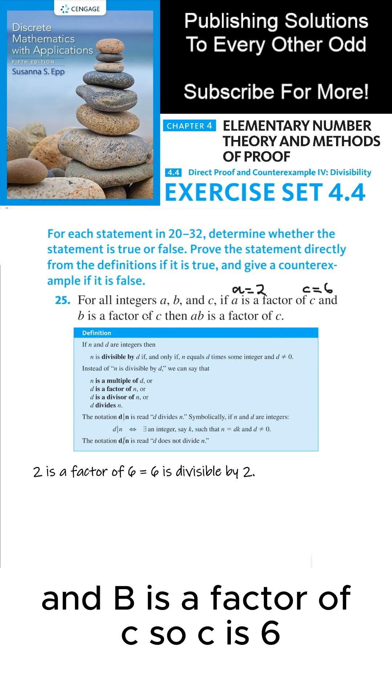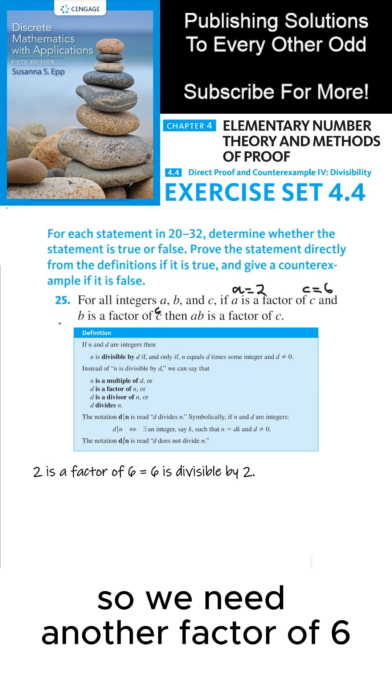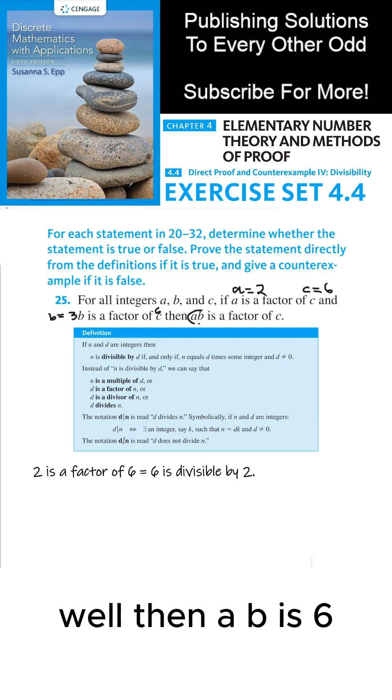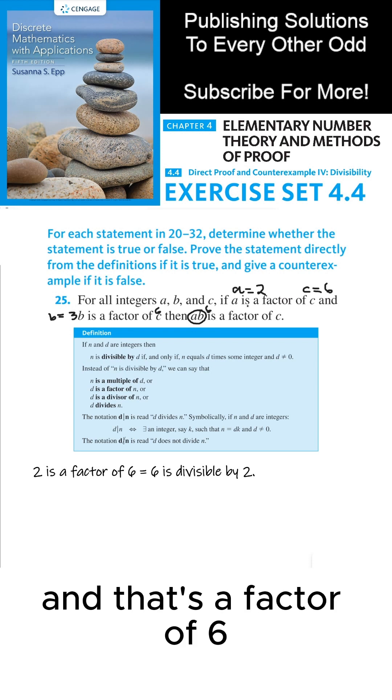And b is a factor of c. So c is 6. So we need another factor of 6. We can pick b equals 3. Then ab is 6, and that's a factor of 6. That's true.